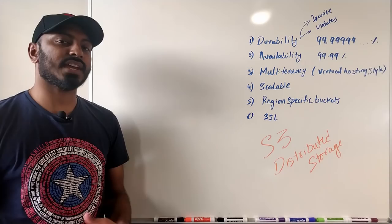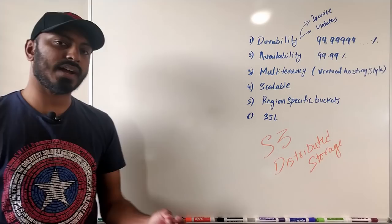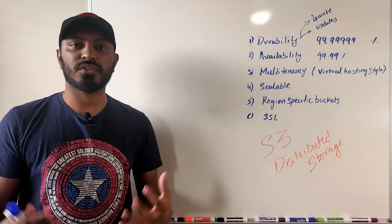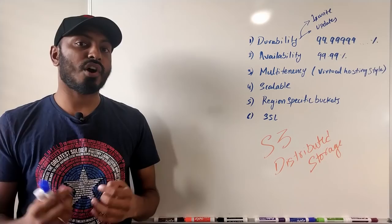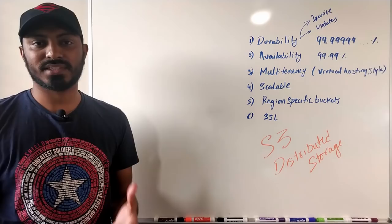The fifth goal is region-specific buckets. These systems give the ability to create a bucket in a specific region, upload files, and access them. They also give the ability to replicate files into multiple different regions. Some systems allow writing or updating files from any region, but most likely will not guarantee consistency. The sixth goal is a secure access layer — all APIs should work on HTTPS and content should be securely stored.